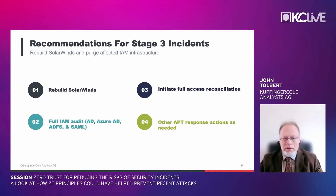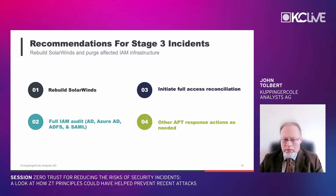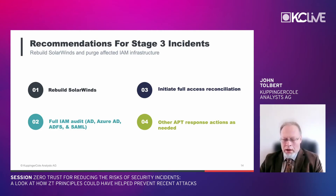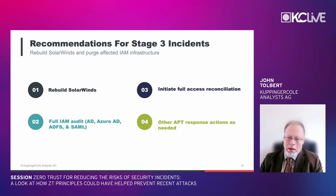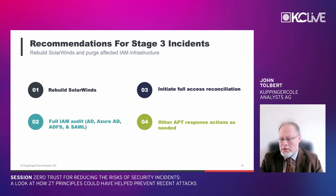For stage three victims, rebuilding SolarWinds is just the beginning. A full IAM audit is required — reviewing all Active Directory accounts, Azure AD, ADFS configuration, and other SAML infrastructure, purging where necessary. Full access reconciliation is needed: all permissions, certificates, and tokens added by the threat actor must be cleaned up to prevent re-establishing a foothold. Additional APT response actions may be needed based on IR team or consultant guidance.